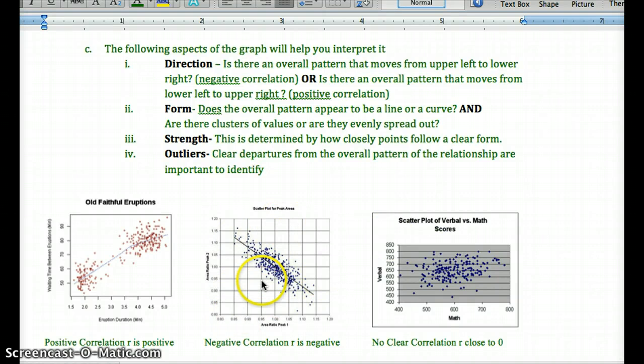Here, the strongest negative correlation would be a negative one, and the strongest positive correlation would be a positive one. So when we see these graphs, we want to think about direction. Is there an overall pattern? Upper left, lower left to upper right would be a positive correlation. Upper left to lower right would be a negative correlation.